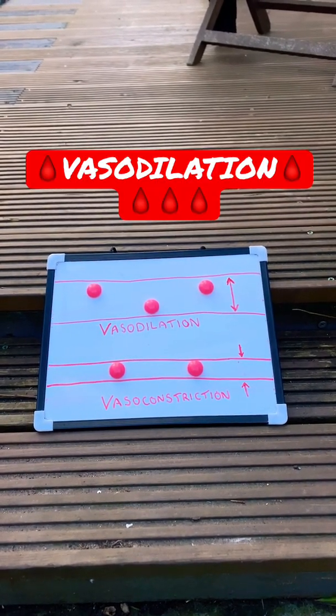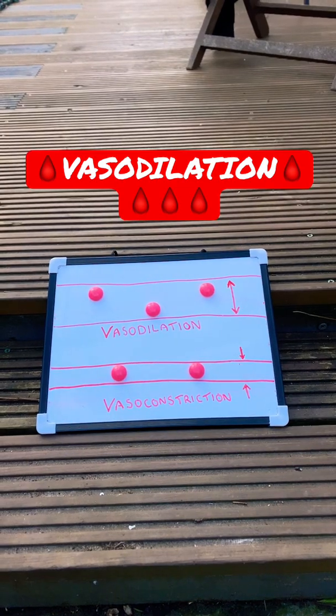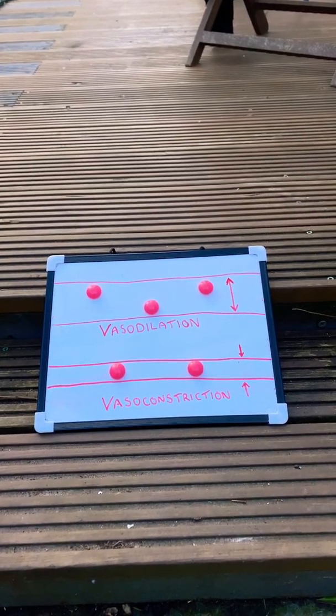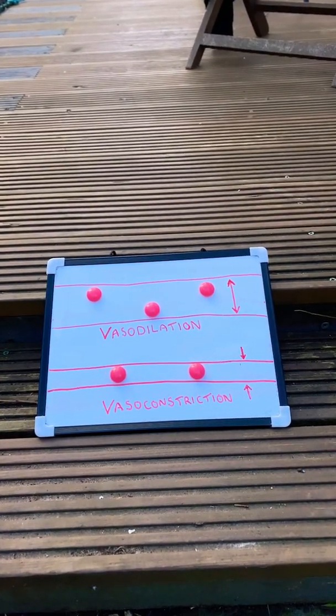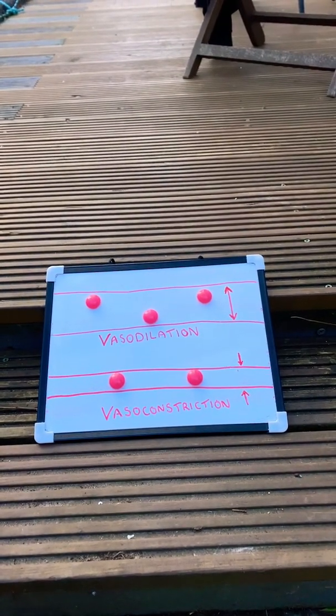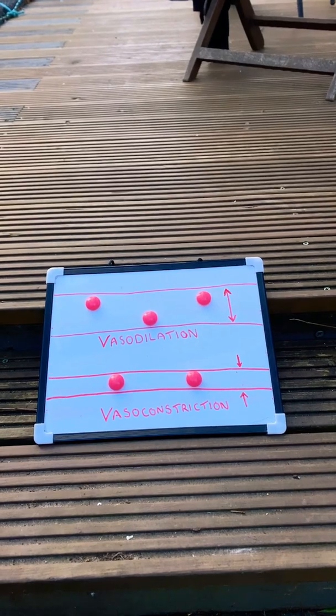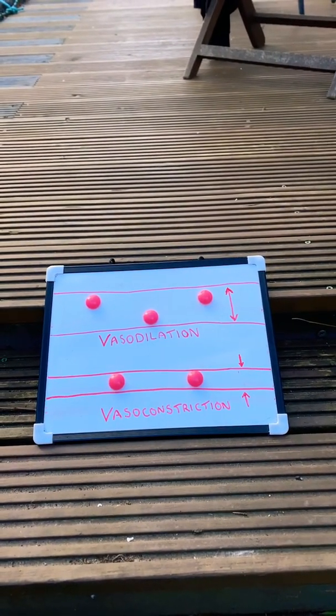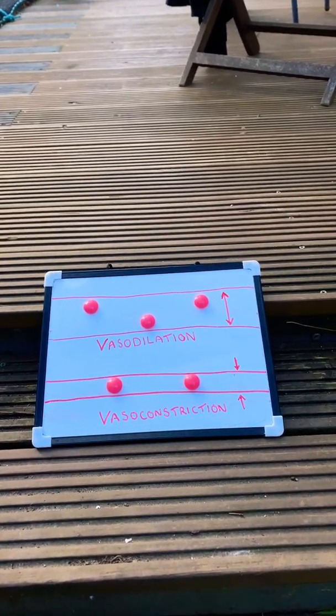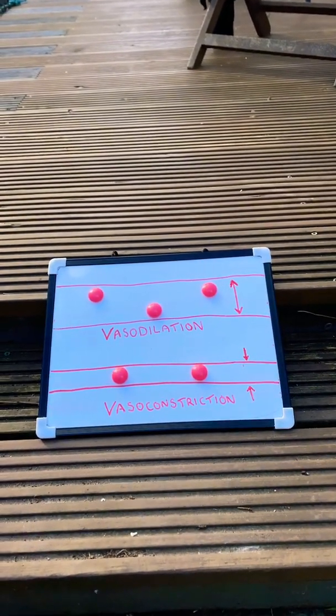Let's begin with vasodilation. During exercise, vasodilation occurs and this means that the walls of the artery move apart, making the diameter of the artery greater. This allows more oxygen and more blood to move through it, which is delivered to working muscles, which helps us meet the demands of exercise.